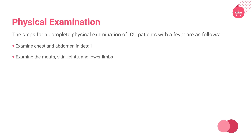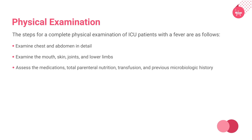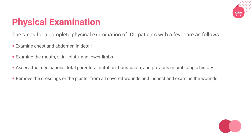Examine the mouth, skin, joints, and lower limbs to look for evidence of poor dental hygiene, wound infections and cellulitis, lymphadenitis, septic arthritis, or osteomyelitis. Any swelling, erythema, or tenderness would suggest deep venous thrombosis. Assess the medications, total parenteral nutrition, transfusion history, and previous microbiologic history. Remove dressings or plaster from all covered wounds and inspect and examine them. The next slide will focus on some initial investigations for the diagnosis.